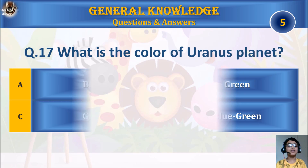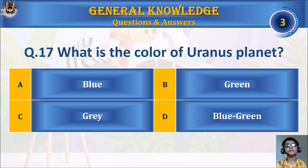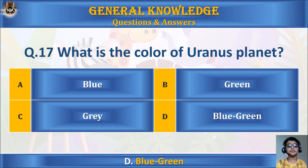Question 17: What is the color of Uranus? A. Blue, B. Green, C. Grey, or D. Blue-Green? Your time starts. The answer is D. Blue-Green.